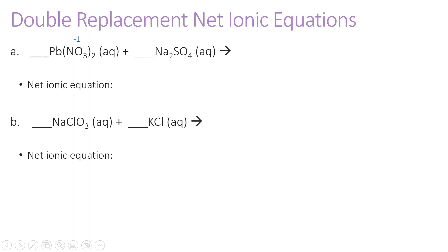I know that nitrate is minus one and there are two of them, so my total negative charge is negative two. So my lead — there's only one lead atom — that charge must be positive two. We have sodium, which is always plus one, and sulfate, which is always minus two. So we're going to switch our cations: lead plus two and sodium plus one.